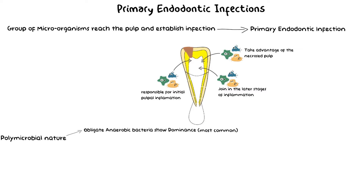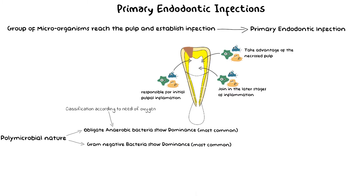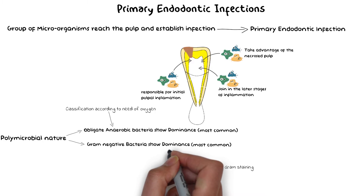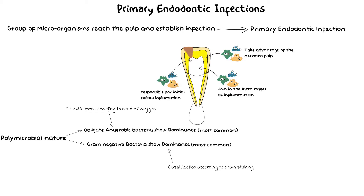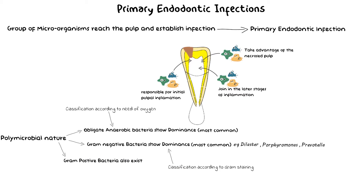If we classify bacteria according to Gram staining — a classification commonly discussed in endodontic and microbiological literature — Gram-negative bacteria appear to be the most common organism in the primary endodontic infection, meaning they turn the dye to red or pink. Many species are present, including Dialister, Porphyromonas, Prevotella, and others. Even though Gram-negative bacteria are very common, Gram-positive bacterial species still exist, including Actinomyces, Filifactor, Streptococcus, and many others. This brings us to the conclusion that obligate anaerobic Gram-negative bacteria appear to be the most common bacteria in primary endodontic infections.